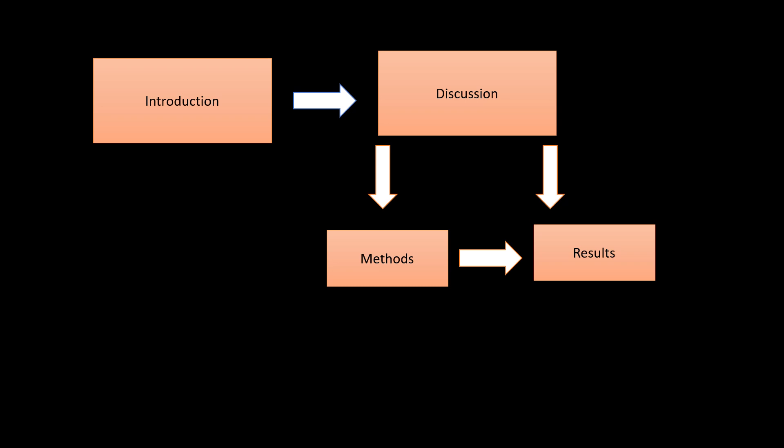The introduction will tell me why they conducted the particular study — the background. I should be very clear about why they did it. If the introduction doesn't tell you why the study was done, it's difficult to appreciate the paper. Next I shift to the discussion, to see how what they wanted to do is being discussed. Then I shift to methods — methods and results together form the heart of the paper, telling us how the study was conducted, what was randomized, what was blinded, and what exactly was done.